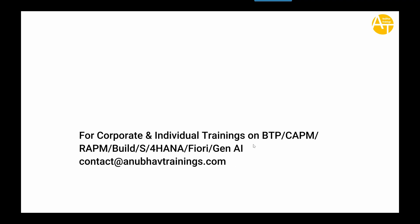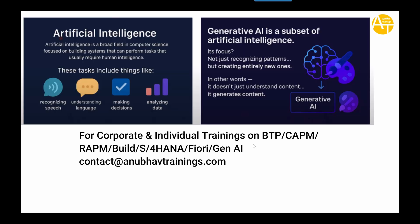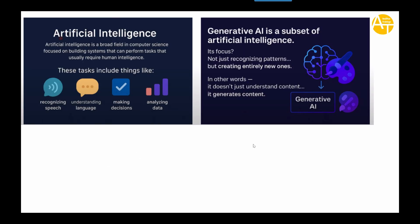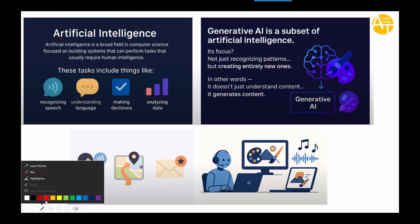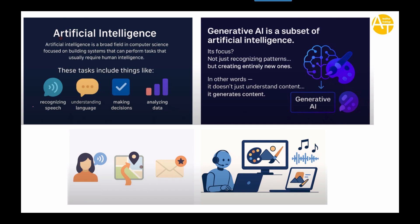So let's get started. Many of you have heard about AI already and you must be wondering what is AI and what is Generative AI. So let's try and understand, first from the definition perspective. Artificial Intelligence — in short we call it AI — is a broad field of computer science which focuses on building systems that can perform tasks that usually require human intelligence. Think about when you look at a cat and how your brain processes and identifies whether the animal you are looking at is a cat or a dog.